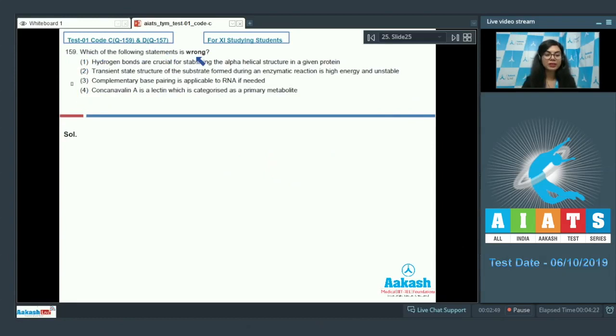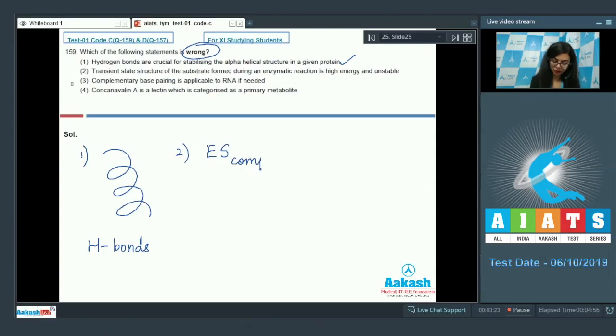159. Which of the following statements is wrong? We are looking for an incorrect statement here. Let's go over the options one by one. Hydrogen bonds are crucial for stabilizing the alpha helical structure in a given protein. That's true. The alpha helical structure of a protein is stabilized by the presence of hydrogen bonds, which makes it a correct option. Transient state structure of the substrate formed during an enzymatic reaction is high energy and unstable. That is also right. The enzyme substrate complex which is formed during the reaction is unstable and has very high energy to it.